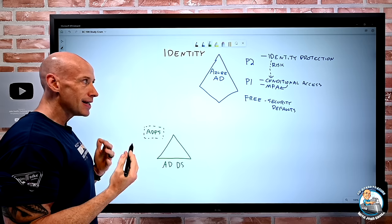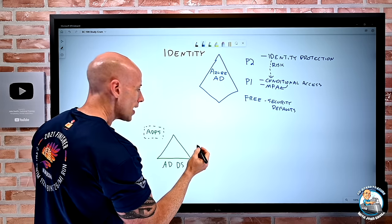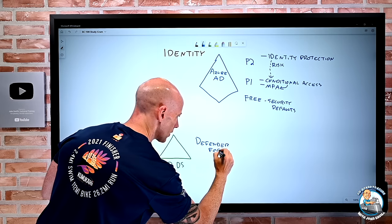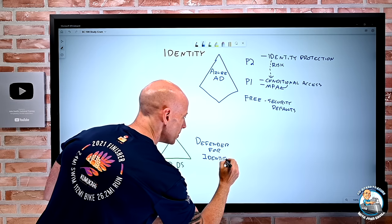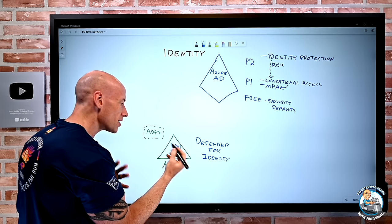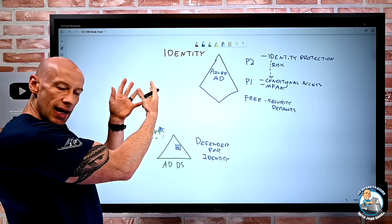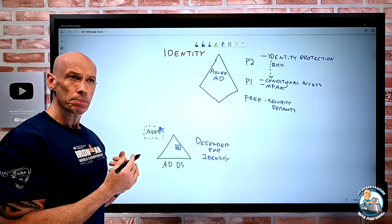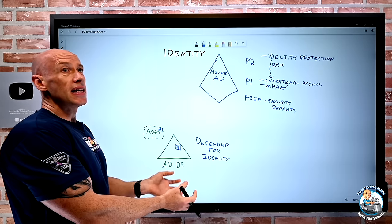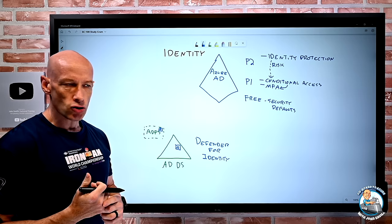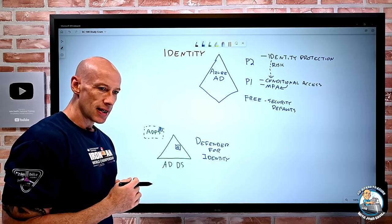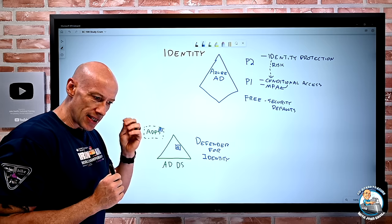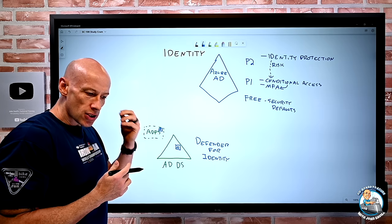To protect identities in on-premises Active Directory, we have Defender for Identity. It deploys agents (sensors) on all domain controllers and on ADFS if present, feeding that data into a cloud-based service. It looks for signs of compromise in your Active Directory environment: pass-the-hash, golden ticket, DNS dumping, large record syncs, and other attack indicators.